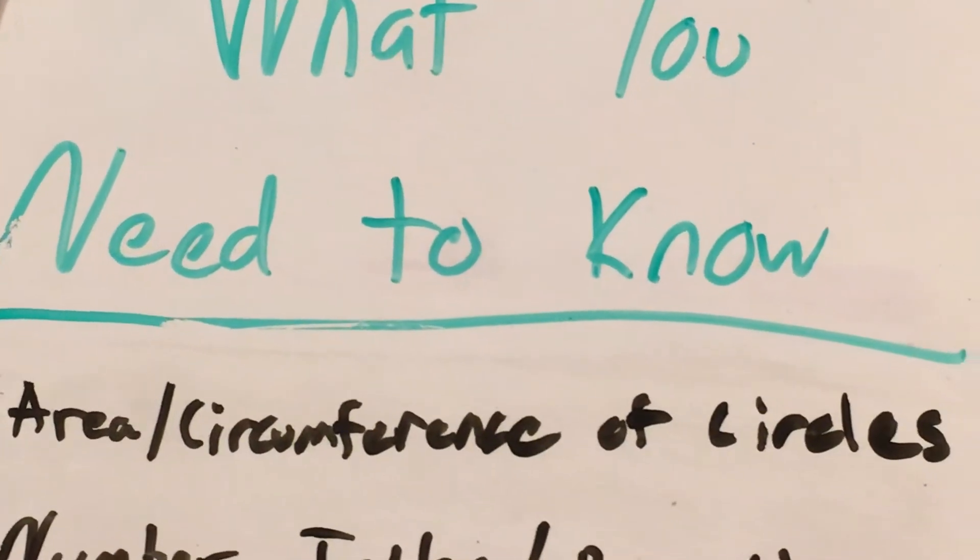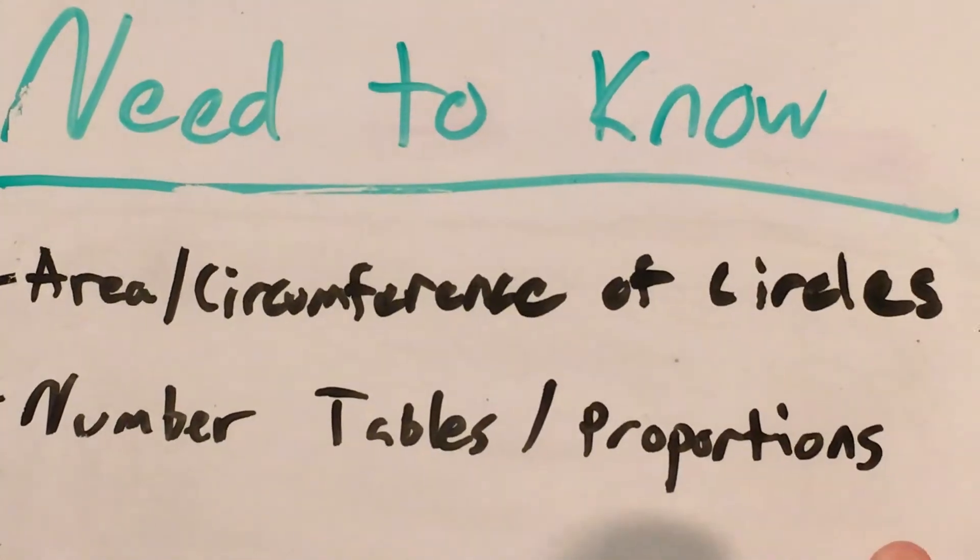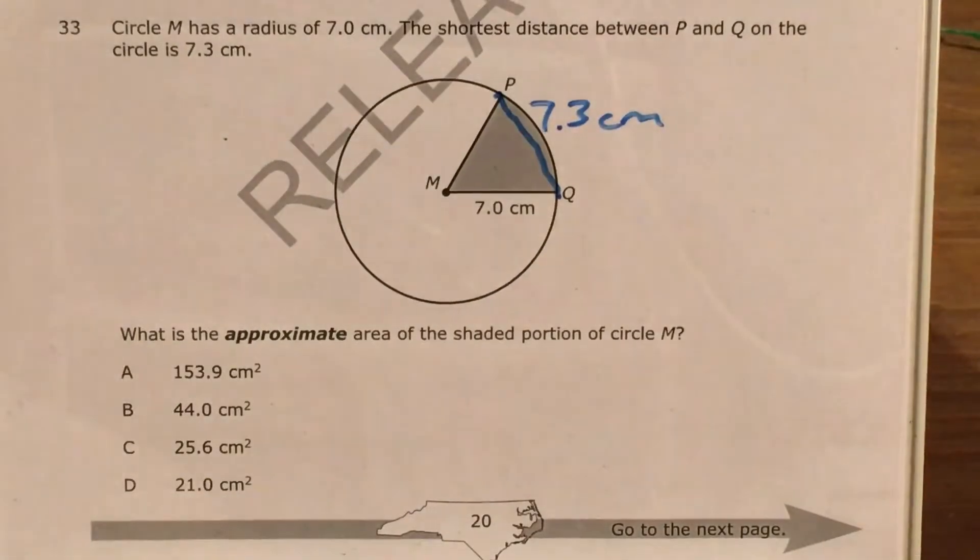So in order to do a question like this, this is going to test us on the area and circumference of circles, and we'll also have to use some proportions to solve this. So first, area and circumference of circle. Unfortunately, we'll need both of these for this problem.